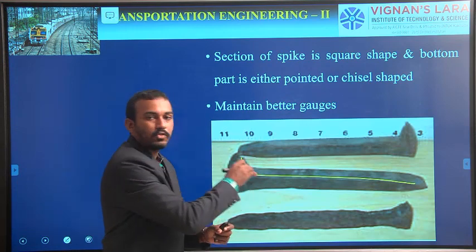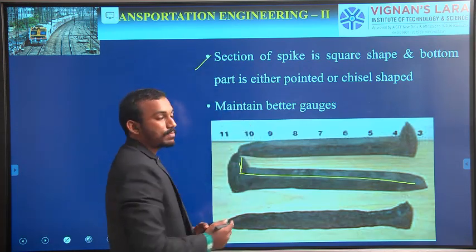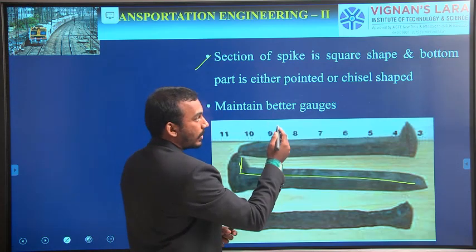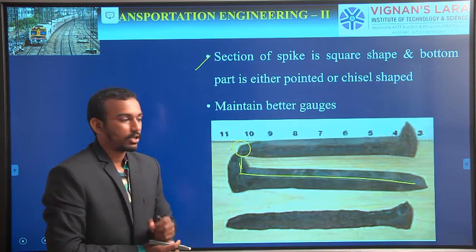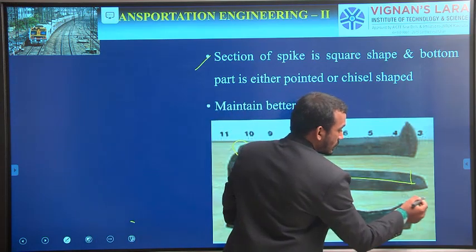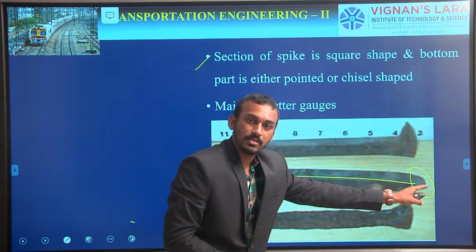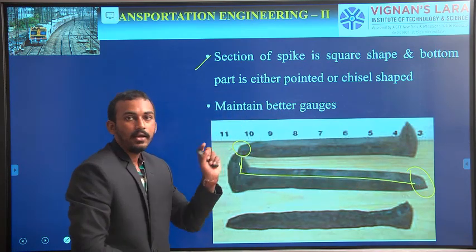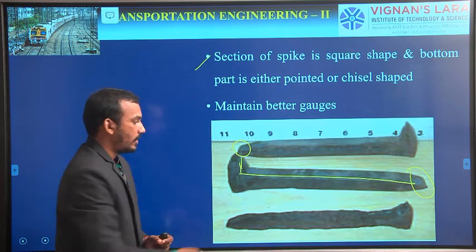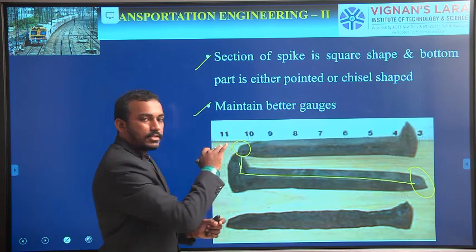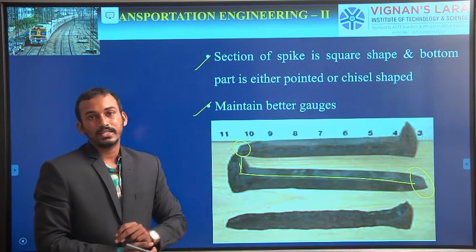We are just inserting them with some impact. The section of the spike is generally square, and the bottom is either a pointed bottom or chisel bottom — the bottom seems to be like a chisel or a pointed bottom, and the head is obviously square. These are better for maintaining the gauges.